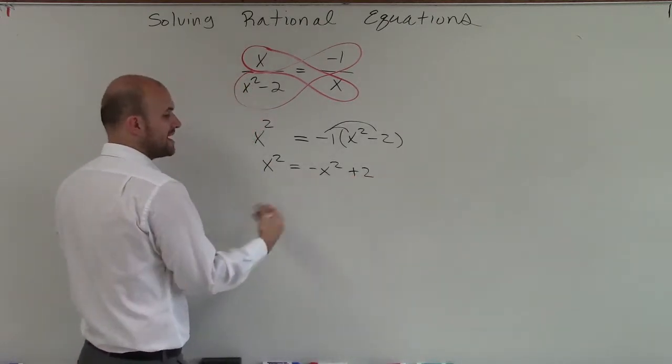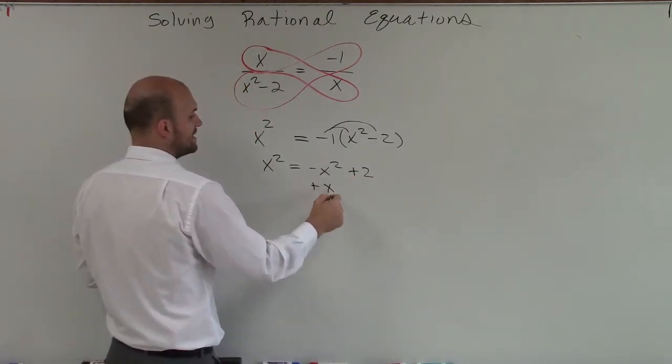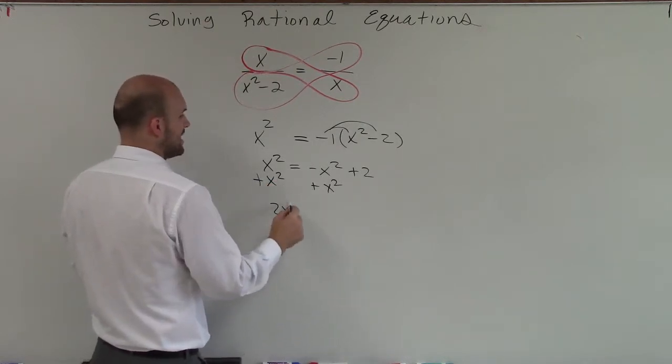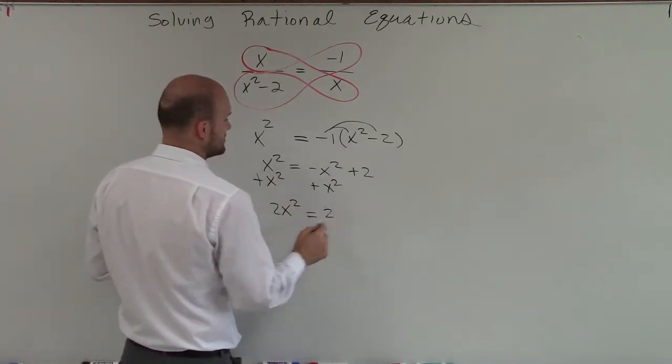Now I need to get my x squared to the same side, so I add an x squared. Therefore, I have 2x squared equals positive 2.